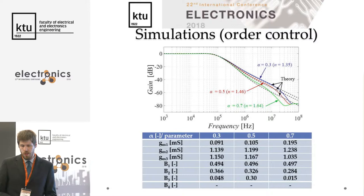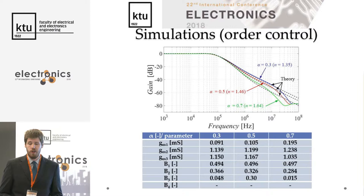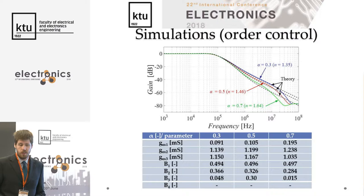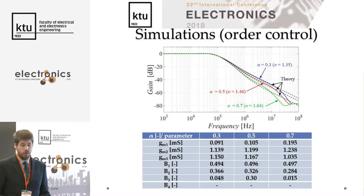For electronic control of the filter order, this is presented for a low-pass function for three different values of alpha: 0.3, 0.5, and 0.7. From the table you can see how to set the parameters of the electronically controllable active elements to obtain the desired order.